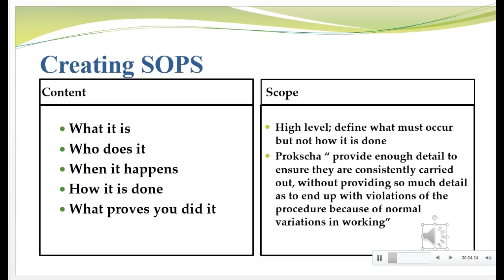When you do, you need to be thinking about content and also scope. For content, an SOP really needs to say what your task is, who does it, when it happens, how it's done, and what proves you did it. Going back to our data entry example, you might have an SOP for data entry that tells that the data entry operator will perform the task, that it happens as soon as the data is retrieved from the site, that it is done using an access-controlled validated database, and that at the end of the data entry process you will be able to run listings to prove that the data was entered correctly.